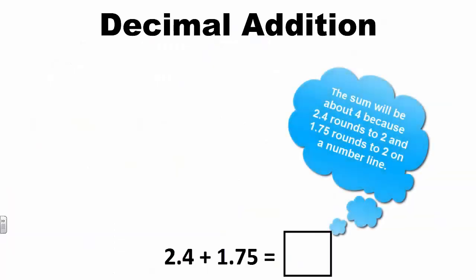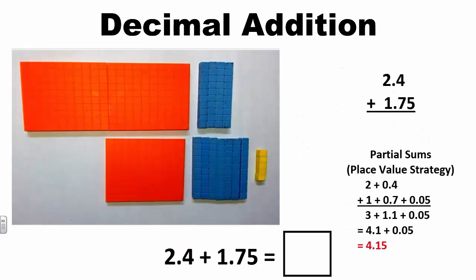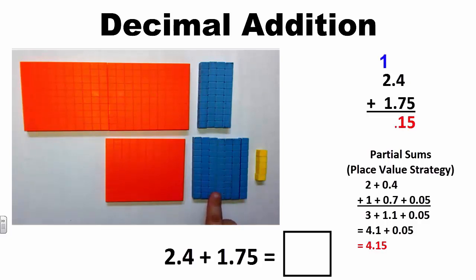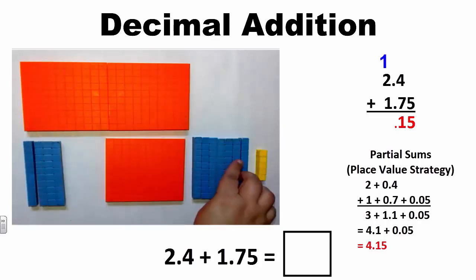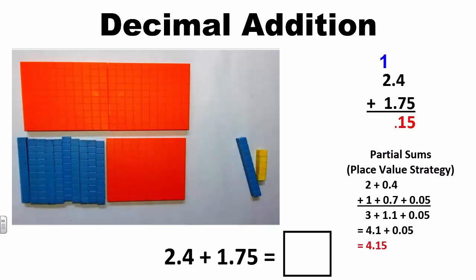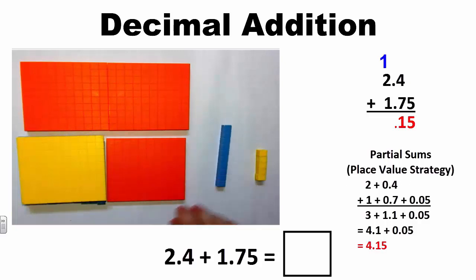Let's start by looking at an example of decimal addition. The first problem we will look at is 2 and 4 tenths plus 1 and 75 hundredths. Let's model this problem using base 10 blocks. Just as we add like place values with whole number addition, I need to add like place value positions with decimals — hundredths to hundredths, tenths to tenths, and ones to ones. 5 hundredths plus 0 hundredths equals 5 hundredths. 4 tenths plus 7 tenths equals 11 tenths. I can regroup because I have a sum greater than 10 tenths, taking 4 tenths and 6 tenths to make a whole. The sum is 4 and 15 hundredths.